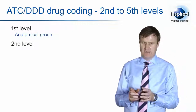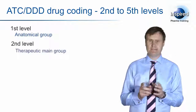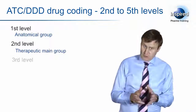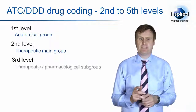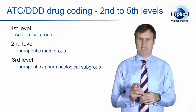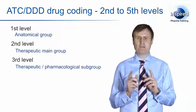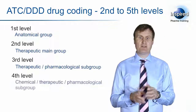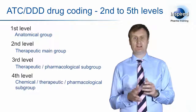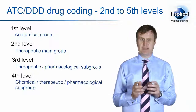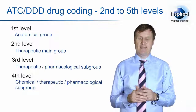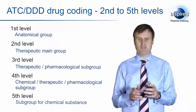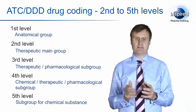The second level is the Therapeutic Main Group, and that gives two numeric characters. The third level is the Therapeutic Pharmacological Subgroup, where another single letter is assigned. The fifth and final level is the Subgroup for Chemical Structure, where two numeric characters are assigned.